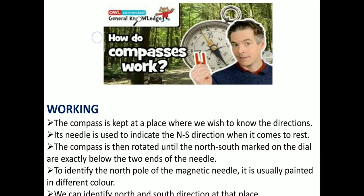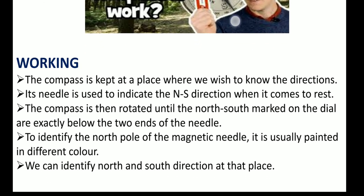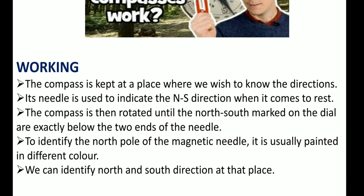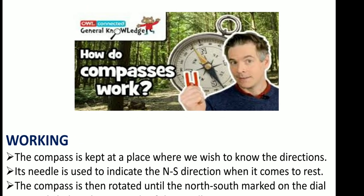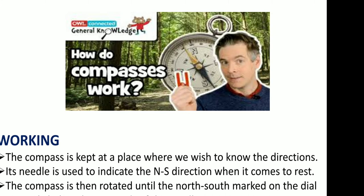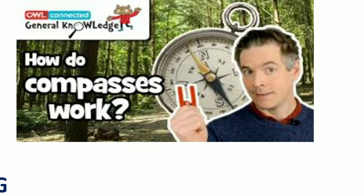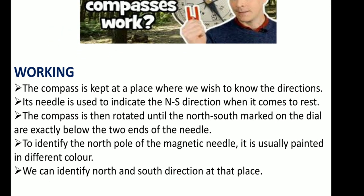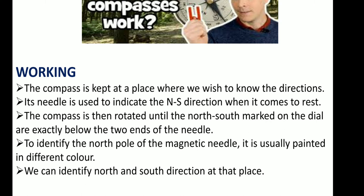Now we will see the working of the magnetic compass. The compass is kept at a place where we wish to know the direction. Its needle is used to indicate the north-south direction when it comes to rest. The compass is then rotated until the north-south mark on the dial is exactly below the two ends of the needle. To identify the north pole of the magnetic needle, it is usually painted in a different color. In the picture, you can see the north pole is painted in yellow. We can identify the north and south direction at that place.